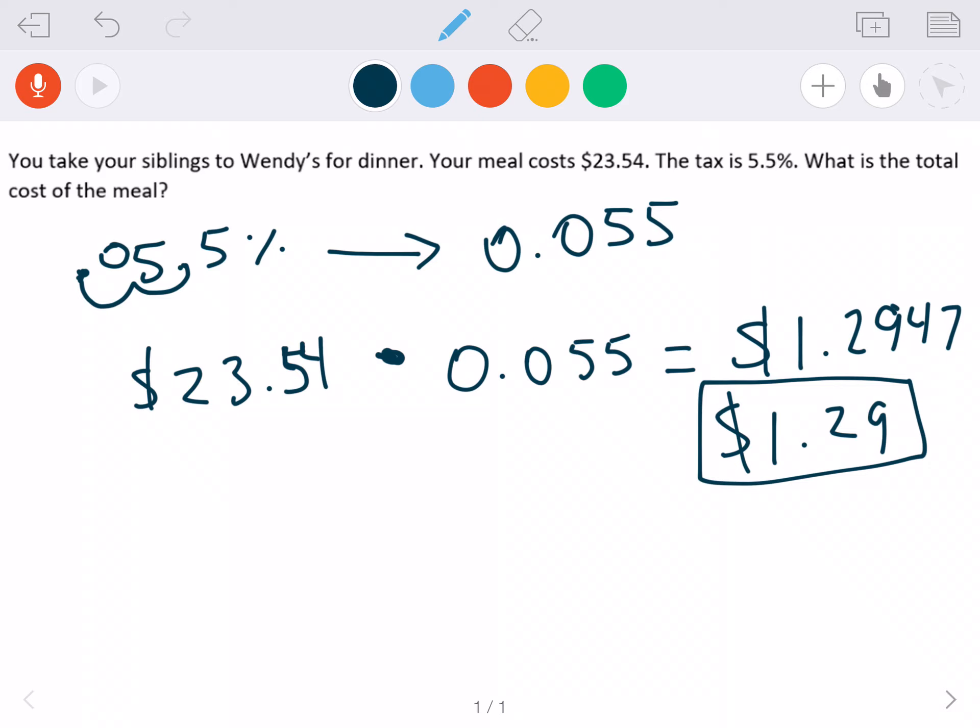Now on these questions, make sure you pay attention to exactly what the question is asking. What is the total cost of the meal? Obviously, the total cost of your meal is not $1.29. Your total cost is also not the initial price. We have to add these two together. That is our final step. I'm adding because tax is added on, it makes it more expensive. So $23.54 plus $1.29 will give us $24.83.